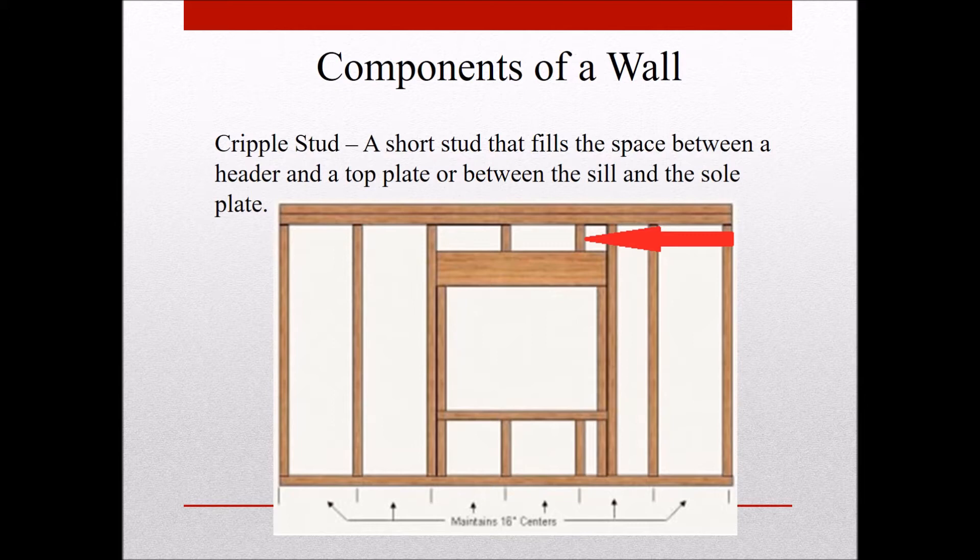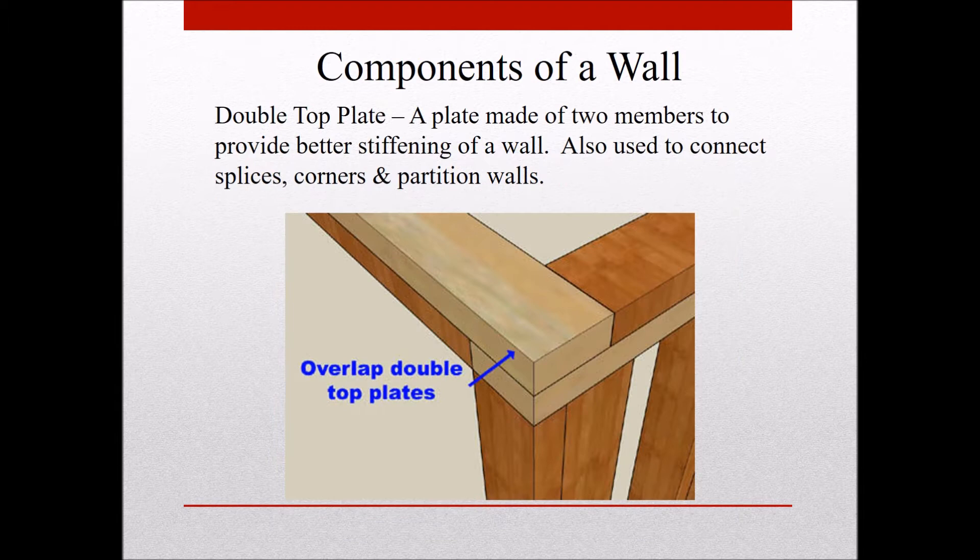The next component of a wall is a cripple stud. A cripple stud is a short stud that fills the space between a header and a top plate, or between a rough sill and a sole plate. So these are both cripple studs.